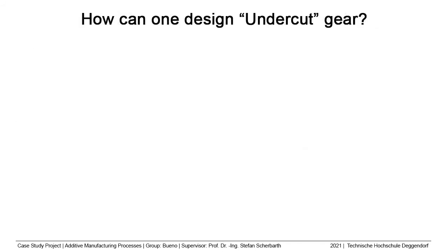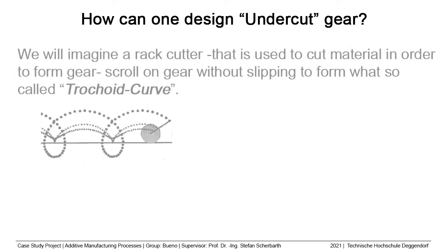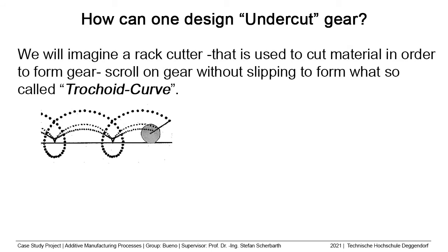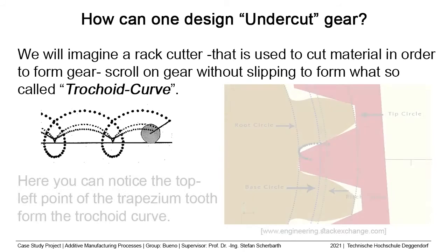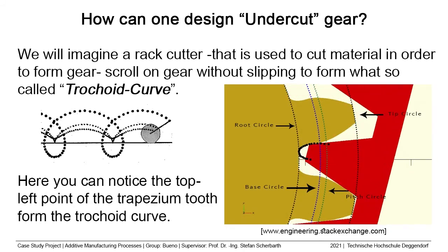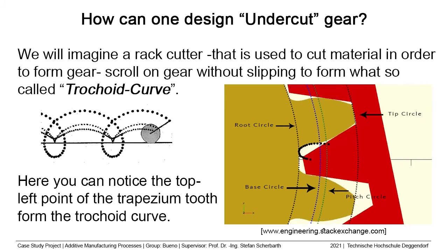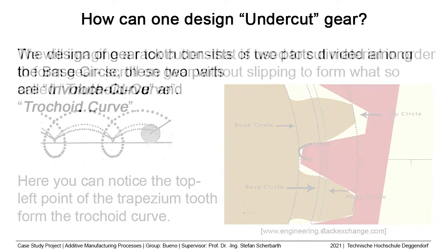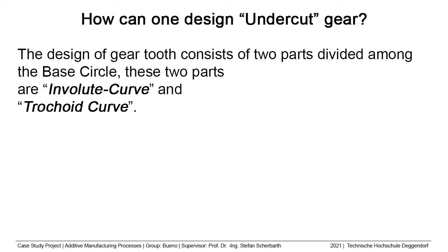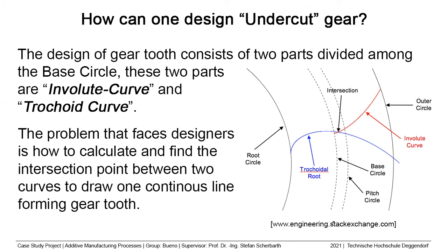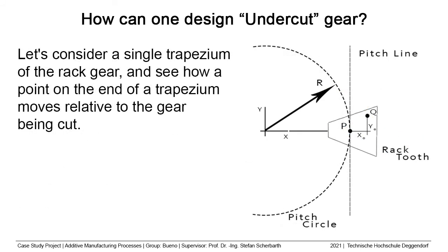How to design the undercut? We will imagine a rack cutter that is used to cut material in order to form a gear. The rack cutter scrolls on the gear without slipping to form a trochoidal curve. The top-left point of the trapezium tooth forms the trochoidal curve. The design of the gear tooth consists of two parts divided along the base circle: the involute curve and the trochoidal curve. The problem that faces designers is how to calculate and find the intersection between these two curves to draw one continuous line forming the gear tooth.